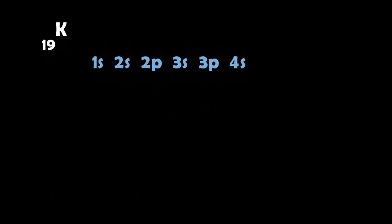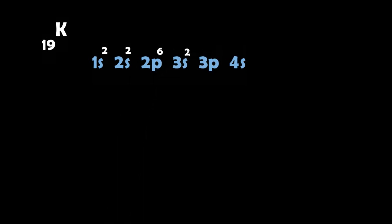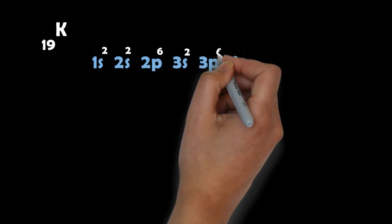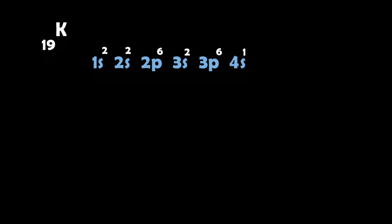We have to do a sub-shell configuration: 1s2, 2s2, 2p6, 3s2, 3p6. This is the sub-shell configuration. The sub-shell configuration — the chemistry is a very simple thing in chemistry.